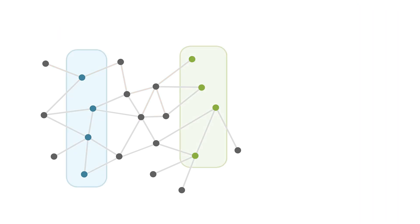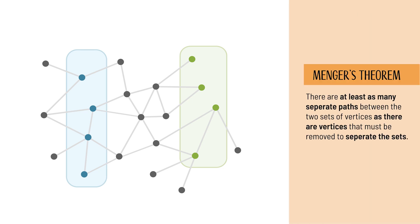Now, let us consider two sets of vertices in such a graph. Menger's theorem states that there are at least as many separate paths between the two sets of vertices as there are vertices that must be removed to separate the two sets. Let us start from the beginning and explain the necessary concepts. How exactly is a separate or disjoined path defined?